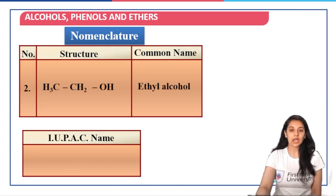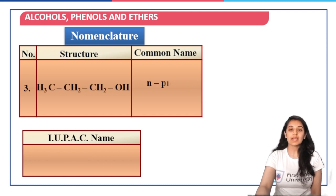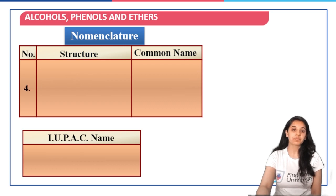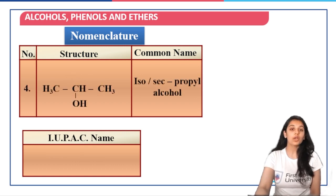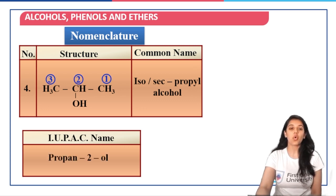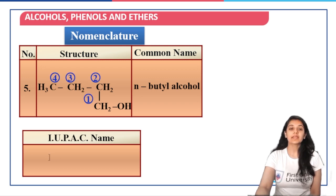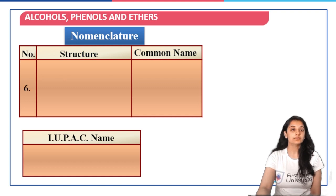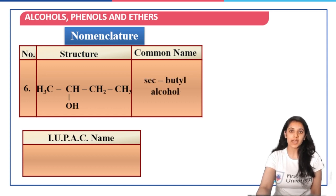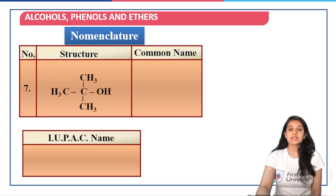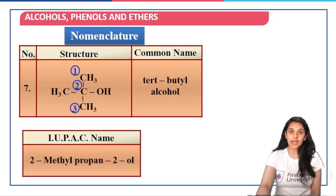Next is ethyl alcohol or ethanol. Next is propyl alcohol, that is n-propyl alcohol or propanol, which is propane-1-ol. Then we have isopropyl alcohol, also called secondary propyl alcohol; the IUPAC name is propane-2-ol. Next we have n-butyl alcohol with IUPAC name butane-1-ol. We can also have OH at the second position in butane — we call it secondary butyl alcohol or sec-butyl alcohol; the IUPAC name is butane-2-ol.